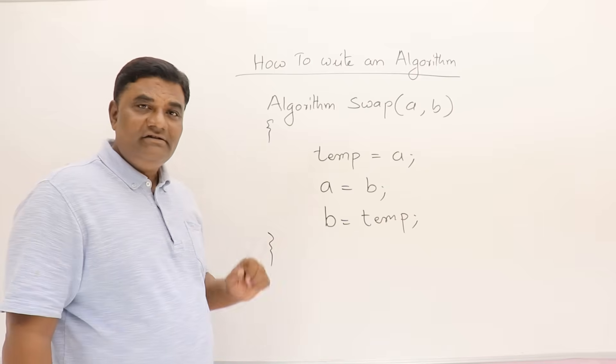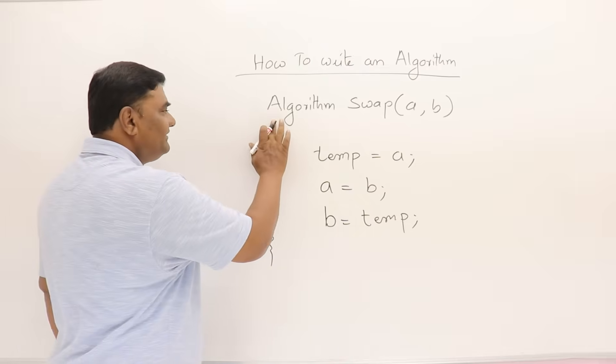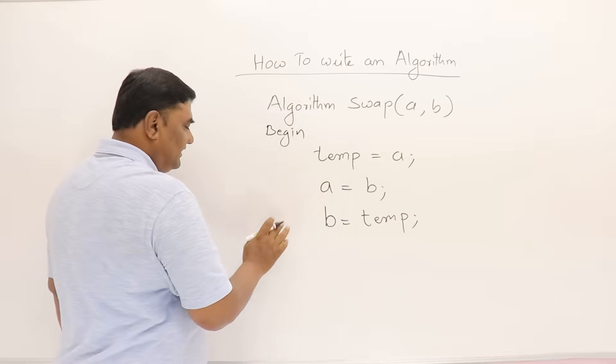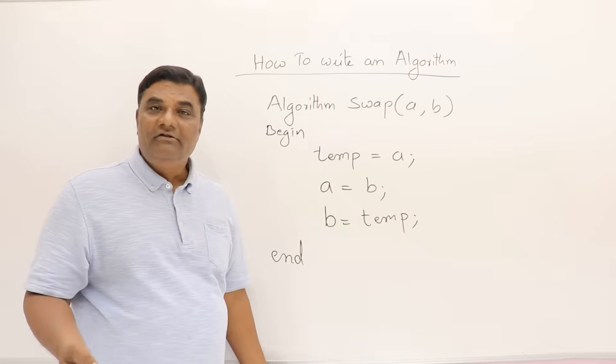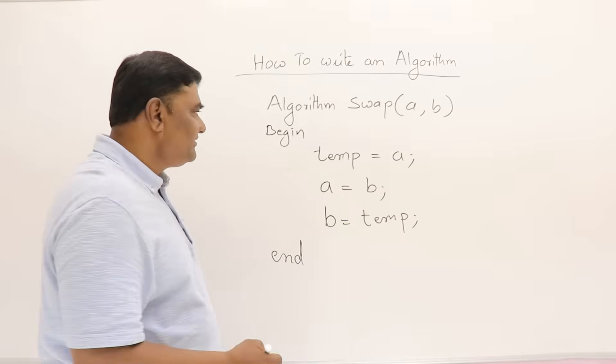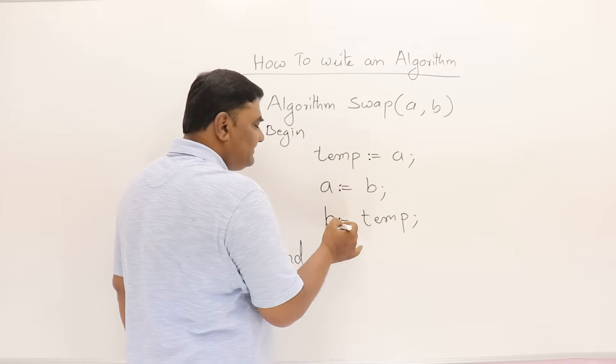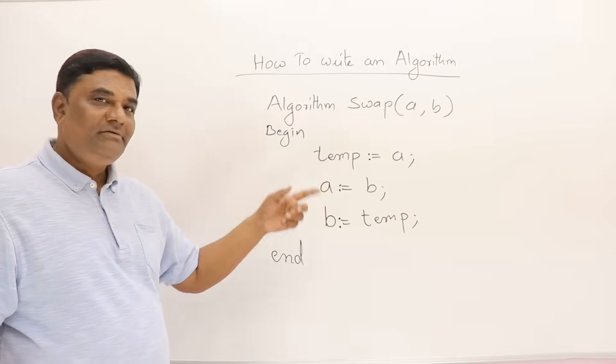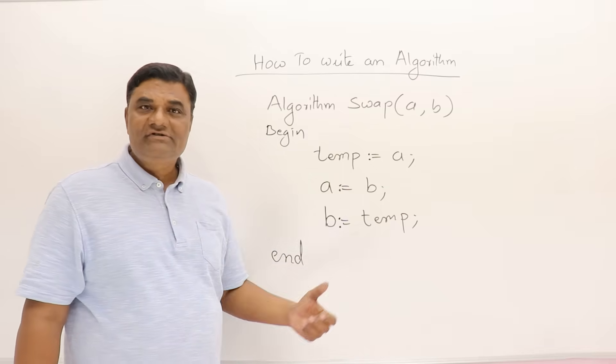This is more like C. Now if you want to write in a different way, you can say this as 'begin' and this as 'end'. Instead of lower brackets, you can also say begin and end. Next, you can use this symbol also for assignment. Actually, this is an assignment symbol that was used in some old languages like Pascal.